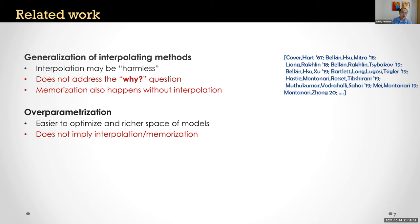The high-level answer we give is that label memorization is a fundamental aspect of learning from natural data distributions — specifically distributions that are long-tailed. We show memorization is necessary for achieving close-to-optimal generalization. I'll describe both the theoretical model, which is important for understanding what's going on, and some empirical evidence. But first, let me start with a bit of intuition about what is going on, which may be even more useful than the theory and experiments.